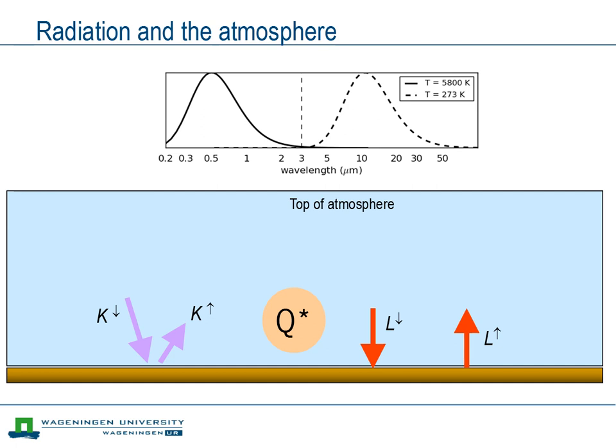The surface net radiation consists of two times two terms. Based on the wavelength we distinguish shortwave radiation and longwave radiation. Shortwave radiation originates eventually from the sun, and longwave radiation has been emitted by the atmosphere or the Earth's surface. Based on the direction we distinguish downwelling radiation and upwelling radiation.